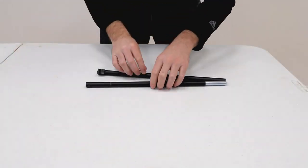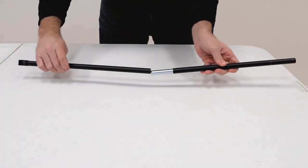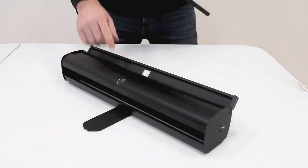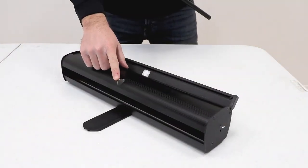Next, go ahead and unfold the shock corded pole and identify the hole at the bottom of the base where you will insert the pole.